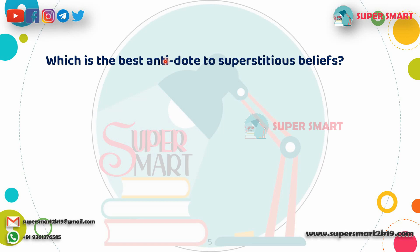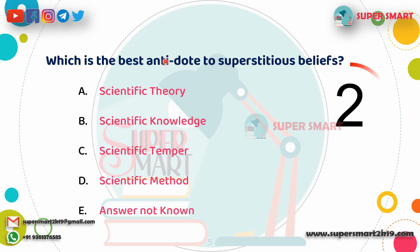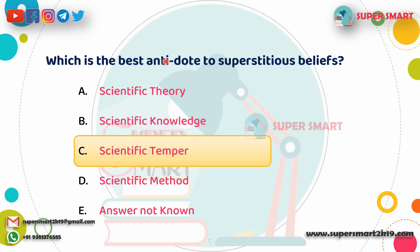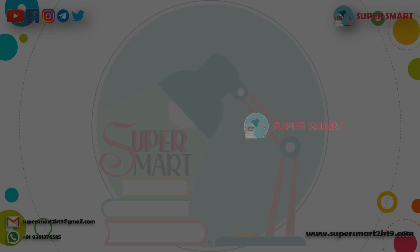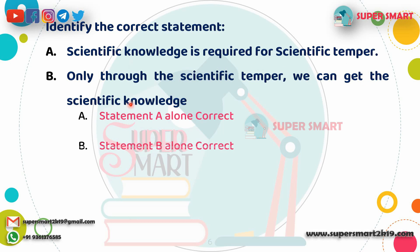Third question: Which is the best antidote to superstitious belief? Scientific temper — if you analyze something and can prove it, that is the antidote. Fourth question: The correct statement is that scientific knowledge is required for scientific temper, and only through scientific temper can we gain scientific knowledge.